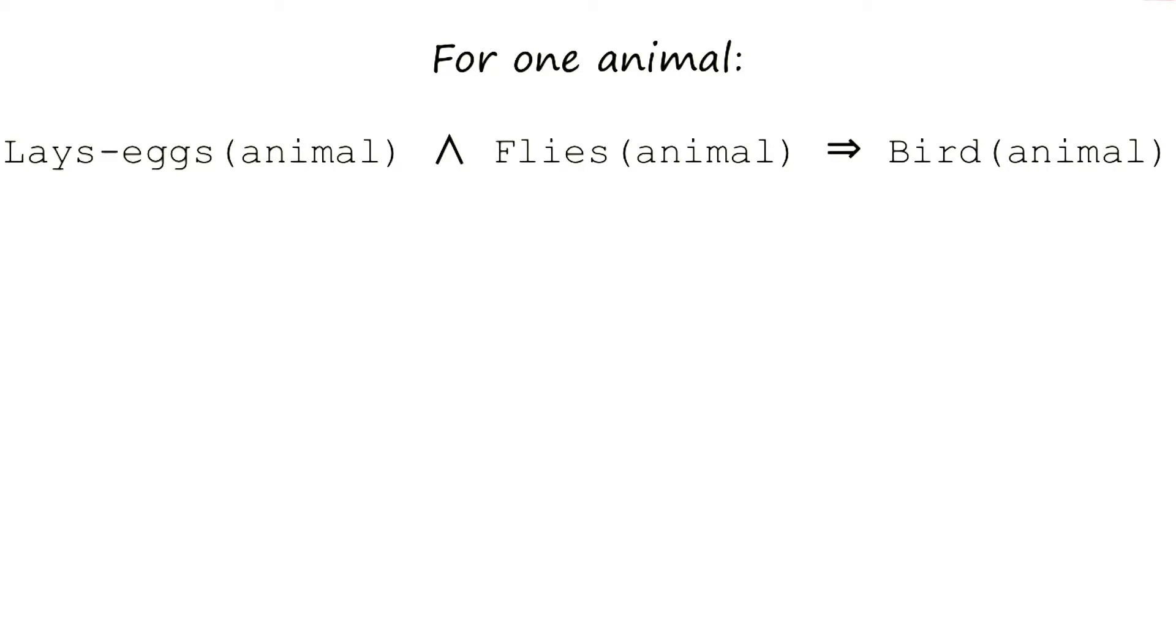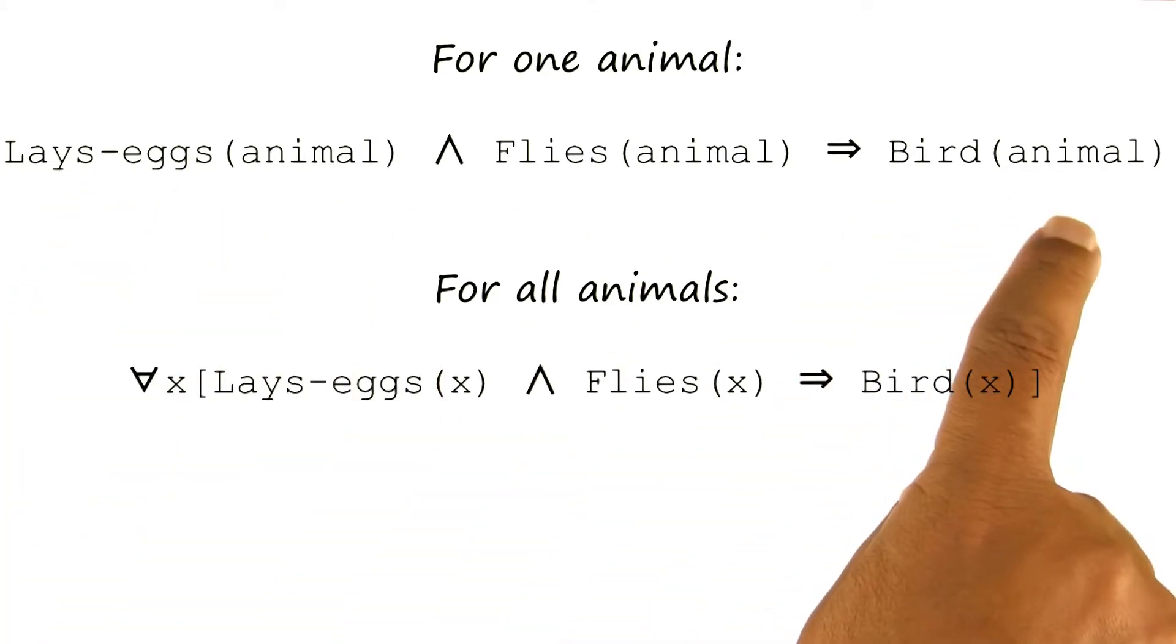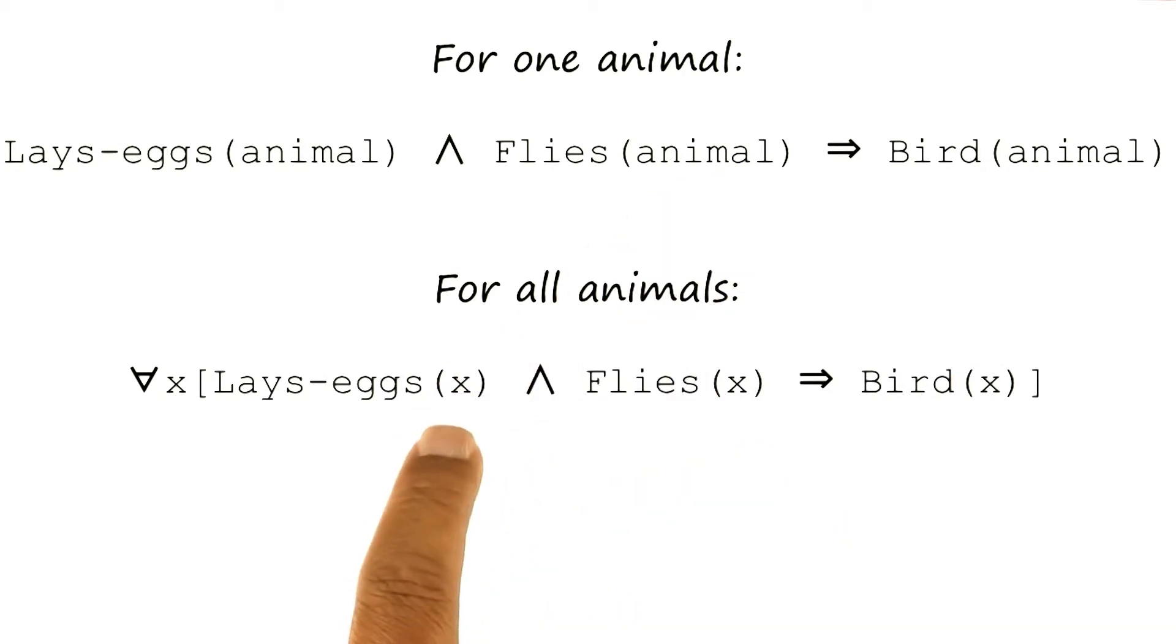In that case, I would want to introduce variables in it. So in first order logic, also known as predicate calculus, I might want to say something like if x lays eggs and x flies, then x is a bird, which has a form very similar to the form here, except that instead of animal, I now have a variable.